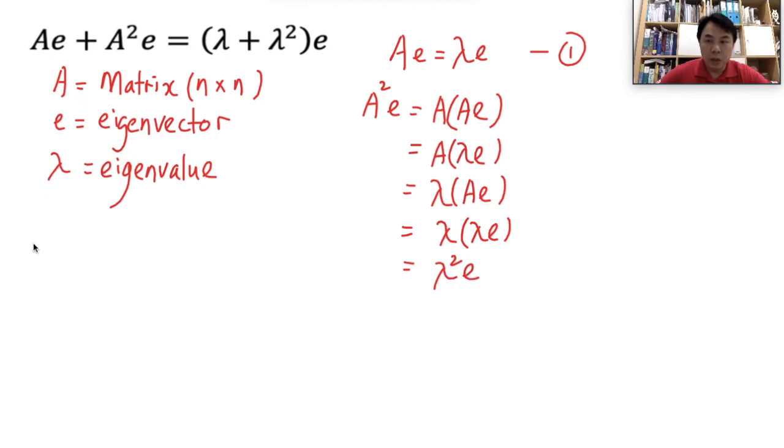Therefore, you know, to prove this, I will rewrite this as Ae plus A squared e is the same as Ae. We can get it from here, which is lambda e. And then, A squared e is basically lambda squared e here.